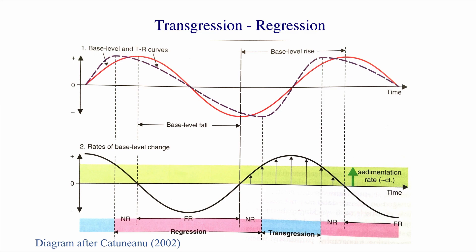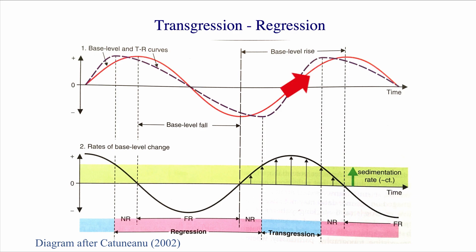On this diagram you have an idealized transgression-regression cycle. The red curve at the top is the base level change, and you can see we have a base level rise — that's when the values go more positive — followed by a base level fall, and then followed by another base level rise. That's an idealized, harmonic curve. Not every base level rise and fall is like this, but this is the simplest curve you can have.